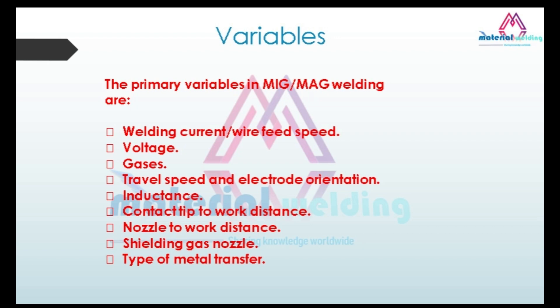The primary variables in MIG/MAG welding are: welding current and wire feed speed, voltage, shielding gases, travel speed, electrode orientation, inductance, contact tip-to-work distance, nozzle-to-work distance, and shielding gas nozzle.